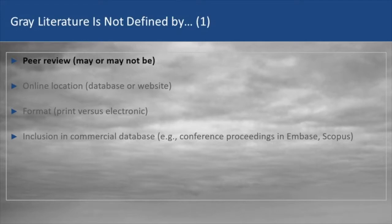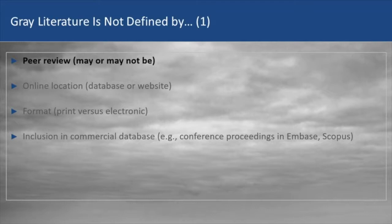So it's more about what gray literature is not — it's not the materials that you find in classic peer-reviewed journal literature. It may be peer-reviewed, it may not. Examples of types of gray literature that you're probably familiar with include conference abstracts, which oftentimes are peer-reviewed. You send in your abstract, a group decides whether to accept it or not — that's a form of peer review.